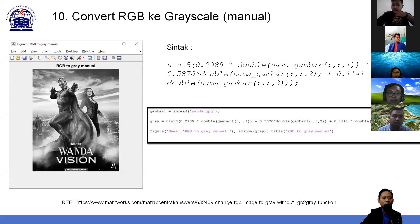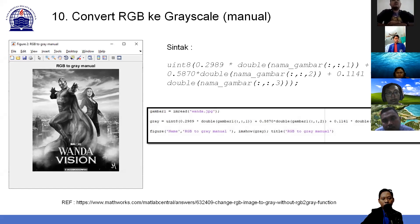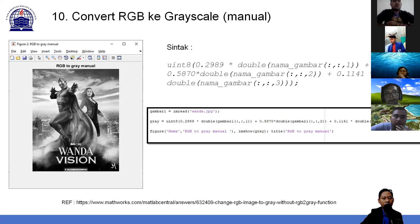Boleh seperti itu. Konversi RGB ke grayscale secara manual caranya: setiap layer dikalikan dengan nilai tertentu. Layer pertama (red) dikalikan 0.2989 atau 0.3, layer kedua (green) dikalikan 0.5870, layer ketiga (blue) dikalikan 0.1141. Ada juga yang membulatkan menjadi 0.3, 0.6, dan 0.1. Kalau dijumlahkan nilainya 1. Hasilnya dijumlahkan dan dimasukkan ke dalam variable grays.